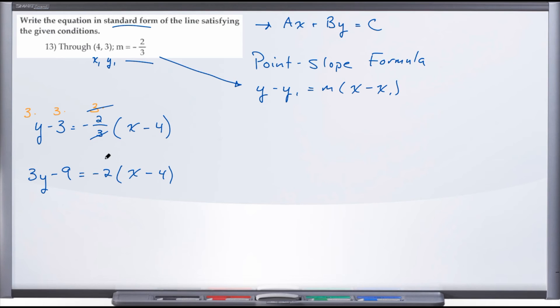Now let's go ahead and put this equation into standard form. The first thing we want to do is distribute this 2 through. So we'll have 3y - 9 = -2x + 8 (negative 2 times x gives us negative 2x; negative 2 times negative 4 gives us positive 8).